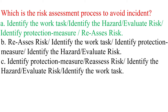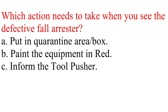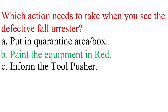Question: Which action needs to be taken when you see a defective fall arrester? a. Put in quarantine area and box, b. Paint the equipment in red, c. Inform the tool pusher. Answer: b. Paint the equipment in red.